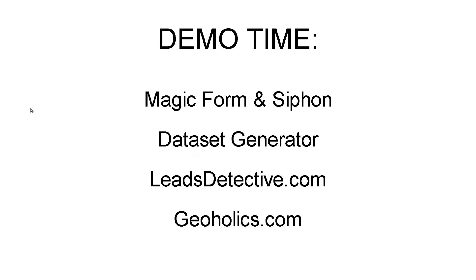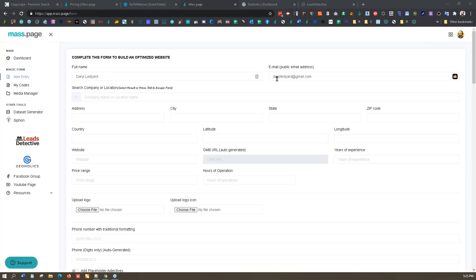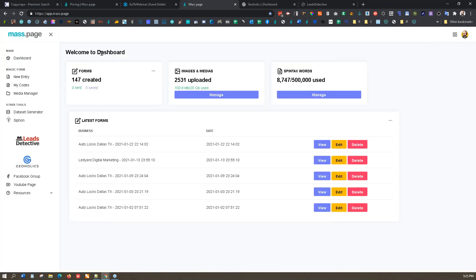Alright, it's demo time. We're going to demo the magic form just a little bit. I've got a lot of videos on what the magic form does, but I want to walk you through what Siphon does inside of it. What you're looking at now is the dashboard of an enterprise plan — this is enterprise here. You see you get 500,000 Spintex words that you can use. If you ever get over 500,000 and it locks up and you're an enterprise person, just let me know and I'll get a reset for you.